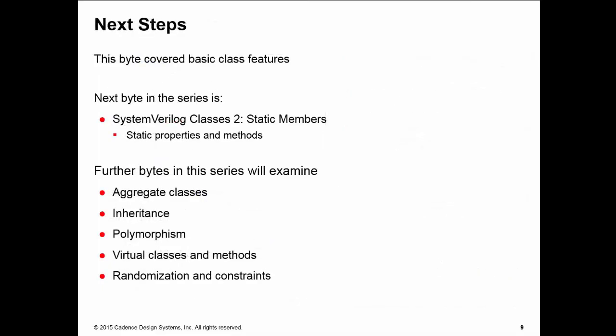That's simple class operation to start off with. We looked at the basic features in this training byte. In the next training byte we'll have a look at static members, static methods and static properties. Further bytes in this series we'll look at aggregation, inheritance, polymorphism, virtual methods, and randomization.